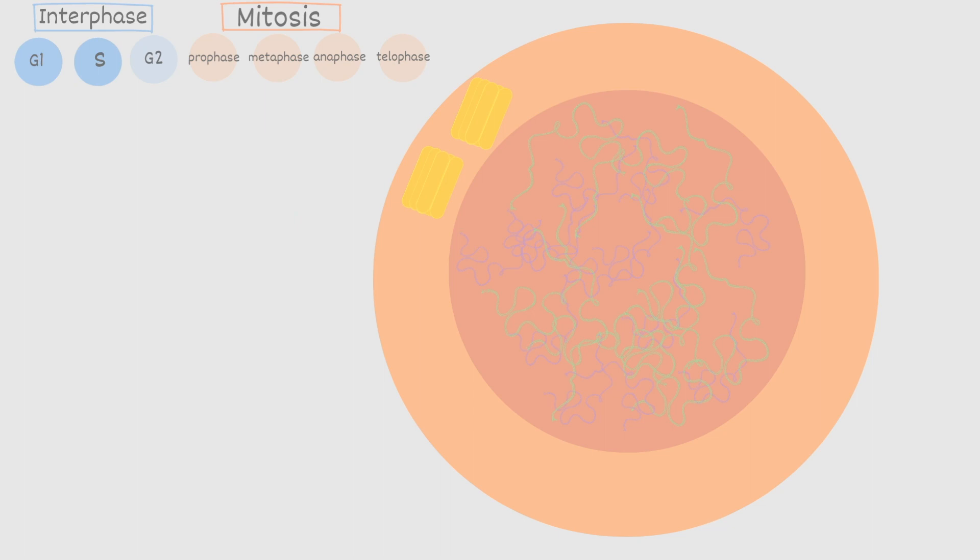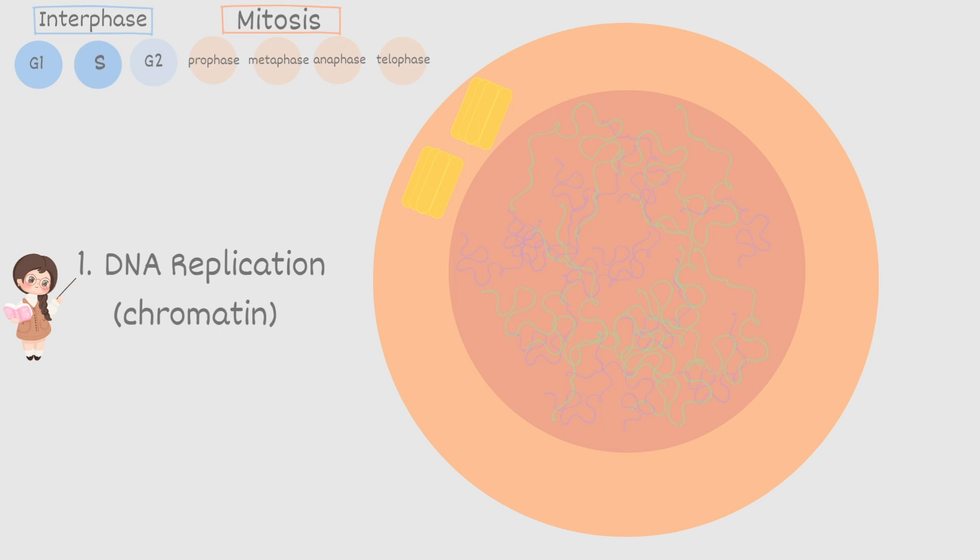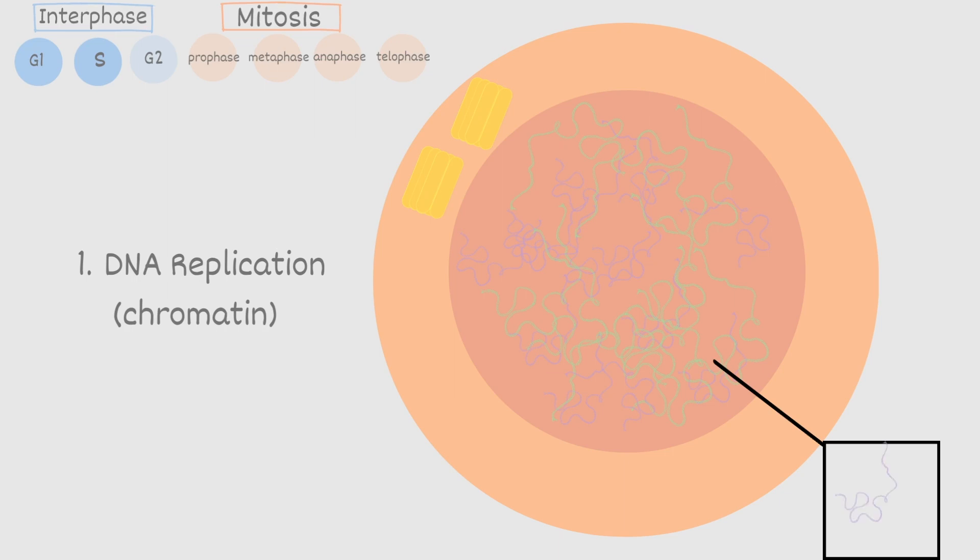After G1 the cell now moves into the synthesis phase or S phase. Keep in mind we are still in interphase. Your S phase lasts about 6 to 8 hours. The major thing that happens in synthesis phase is DNA replication. In other words replication of each of the chromatin. So if we took a close-up here and look at the chromatin activity during this phase you would see every single chromatin duplicate itself.